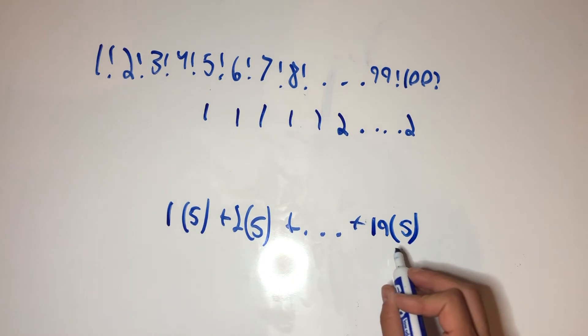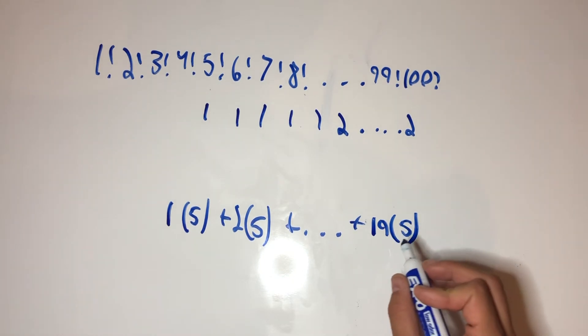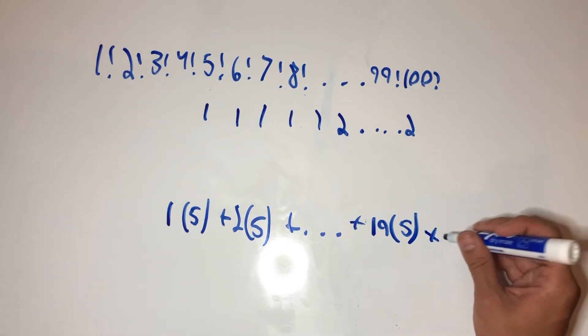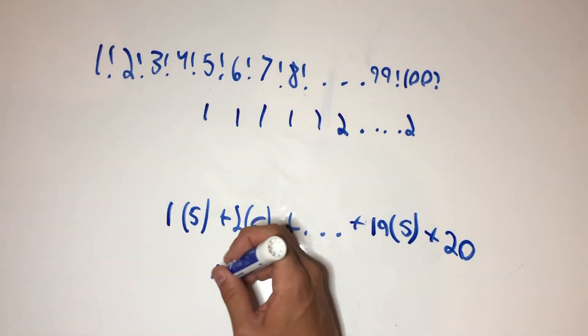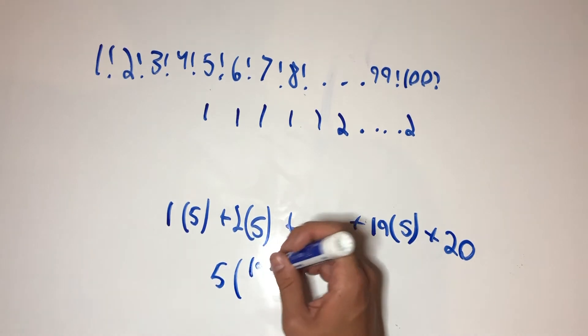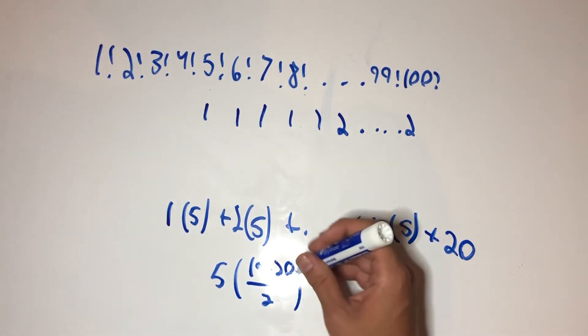So, that is accounting for 95, 96, 97, 98, 99. And then we have plus 20. Now, we can simplify this as 5 times 19 times 20, over 2, plus 20.